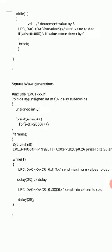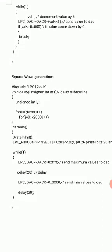Next is square wave generation. You include the lpc17xx.h header file. A delay subroutine is introduced using two for loops with variables i and j. The inner for loop with j has only a semicolon — no instructions — so it executes until j reaches 2000. Then the outer loop increments i and checks against the ms parameter, continuing until i reaches ms, introducing the required delay.